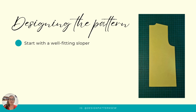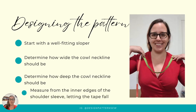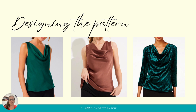When we design our pattern we're going to start with a well-fitting sloper. We'll determine how wide the cowl neckline should be by measuring the length of the shoulder seam from the outer edge of the shoulder inwards. Then once we've determined where the inside points are, we're going to take a tape measure and drape it so that we could measure the length of the neckline, measuring from the inner edges of the desired shoulder seam. There are many different cowl necklines and the difference is where we add fullness, where we add pleats, and where we let the additional fabric be. We're going to discuss several variations today.